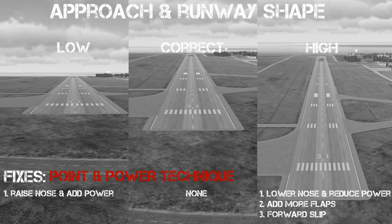Bad airspeed and altitude control is often a big problem. You rectify this by using the point and power technique and being able to recognise if you're high, low, or on glide path.